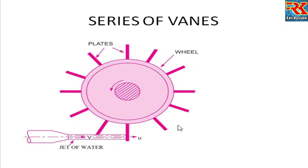If we use a turbine, we use blades on the outer periphery — a series of vanes. Now let's go to the derivation. We will learn how to analyze the moving fixer. Let's consider the jet of water and find the initial velocity and final velocity in the x and y direction.